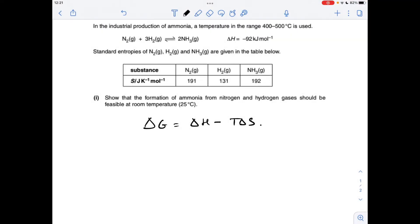Okay, so the first part of the question, we've got to show that the formation of ammonia via this equation is feasible at room temperature 25 degrees C.